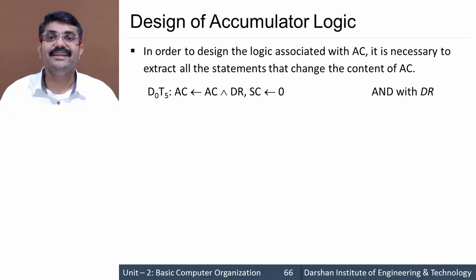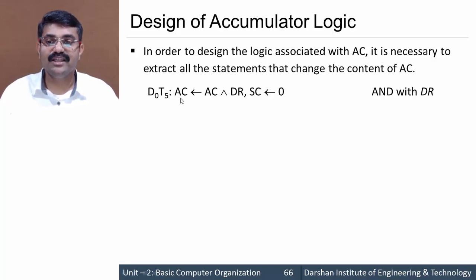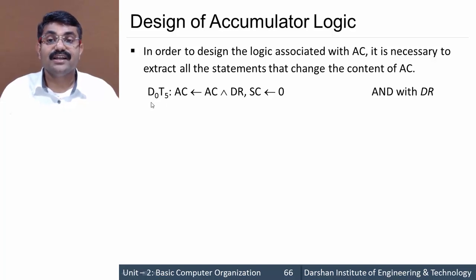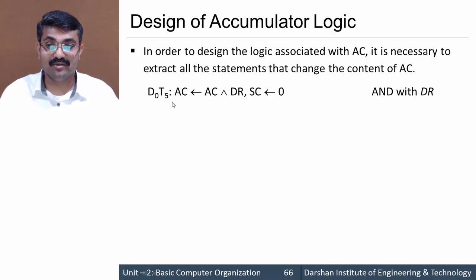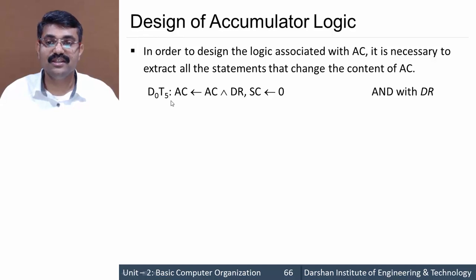The first instruction is AND, because AND is carried out on the accumulator. In this instruction, AC is affected as: AC = AC AND DR. This occurs at time D0T5. We are now controlling the accumulator register, so timing is very important as studied in register transfer language. The control function here is D0T5: AC = AC AND DR.